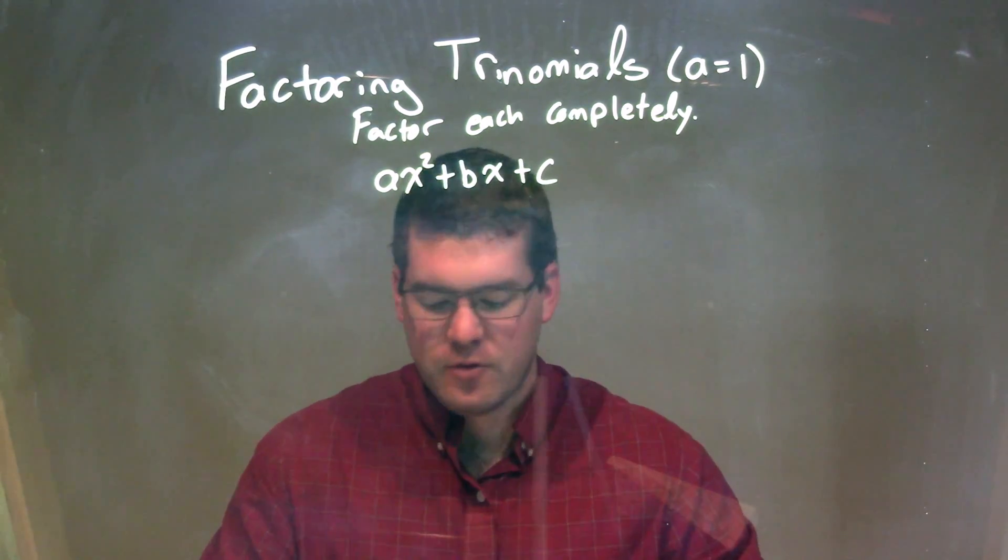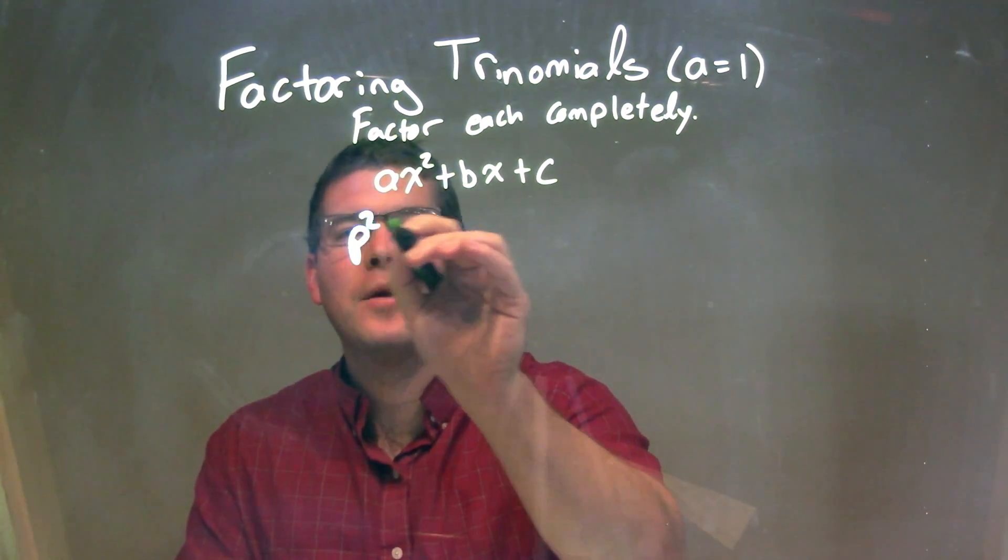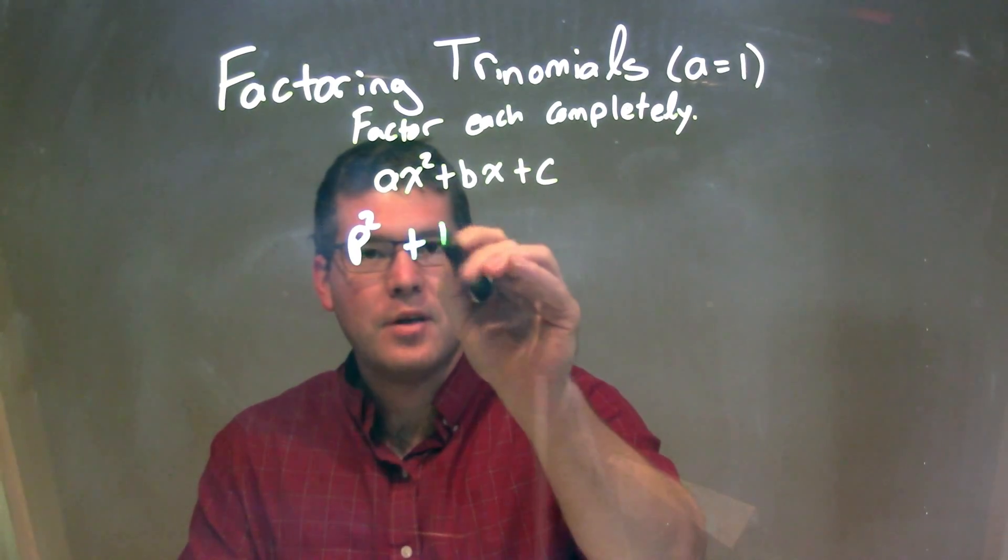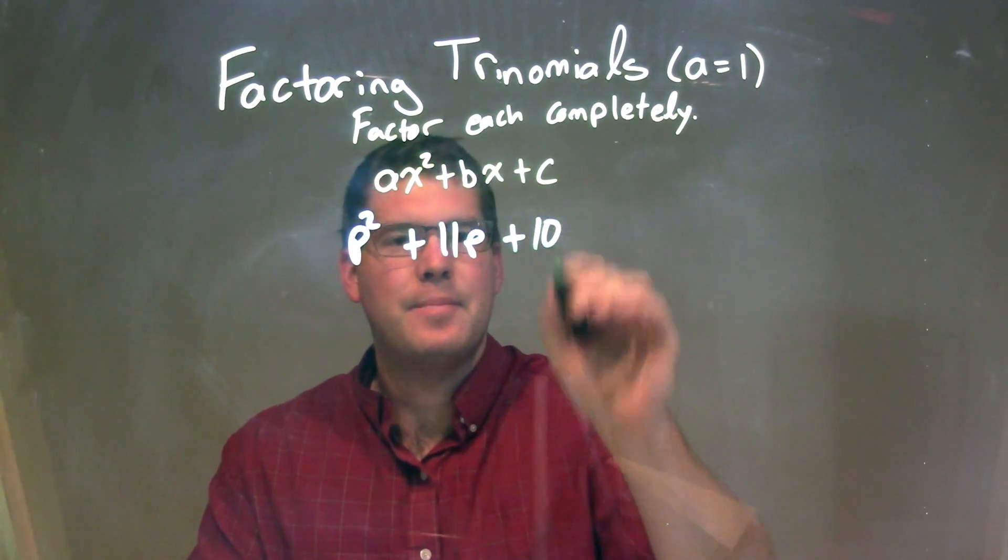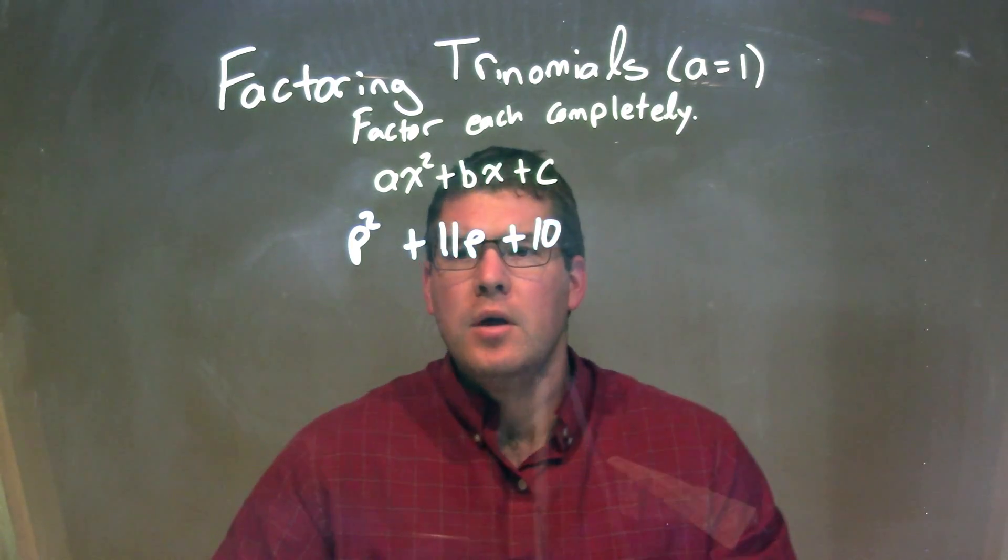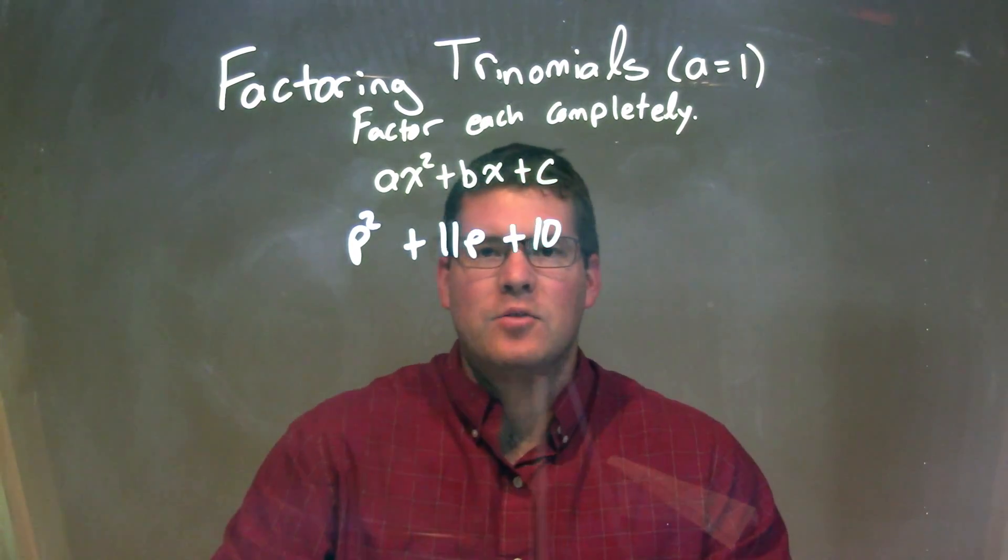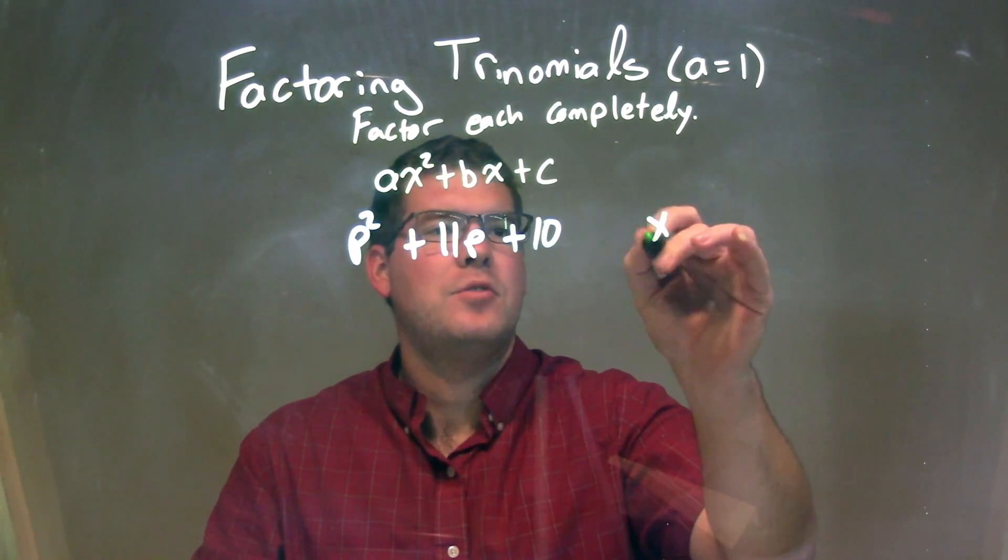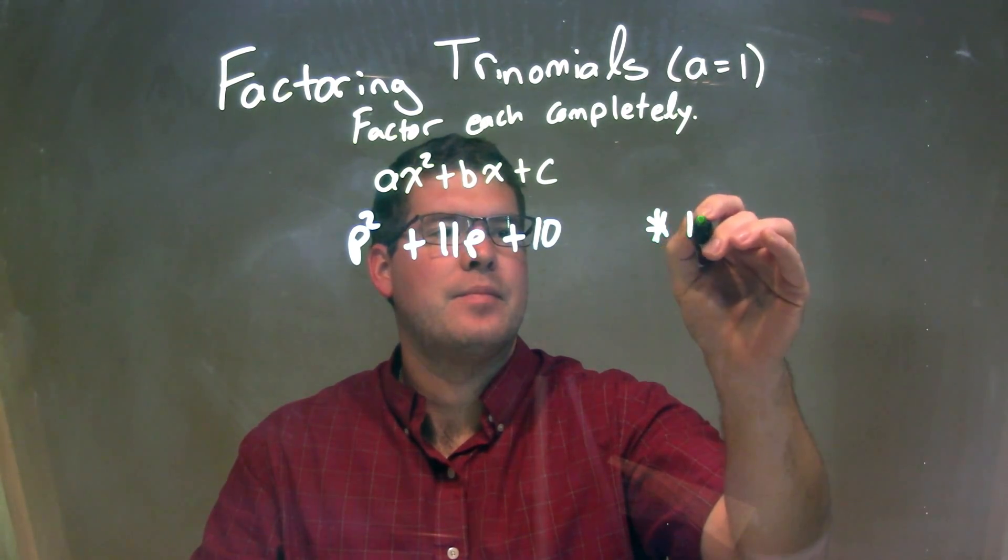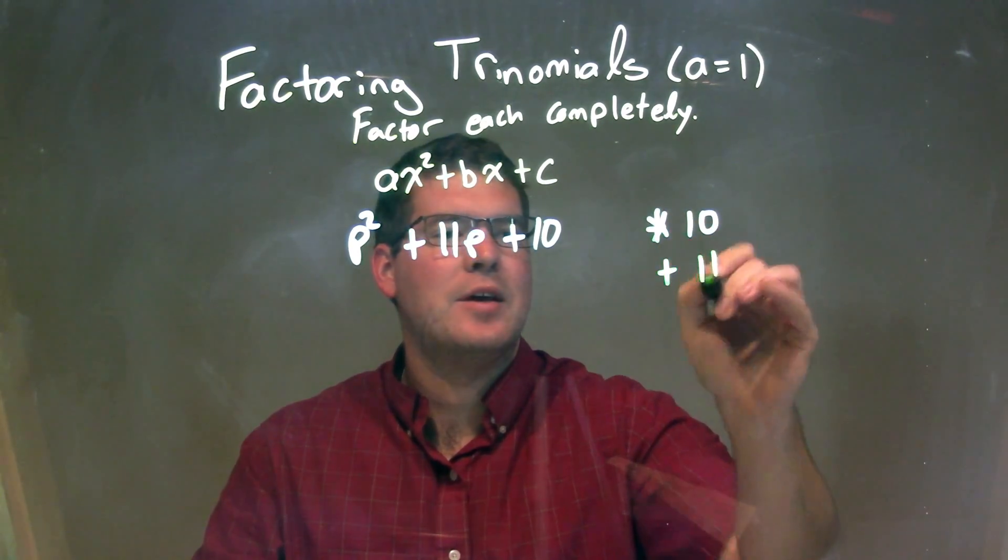So if I was given this trinomial p squared plus 11p plus 10, I have an a value of 1 here, so I'm going to ask myself this question. What two numbers multiply to be 10 but add to be 11?